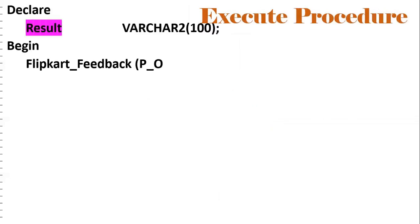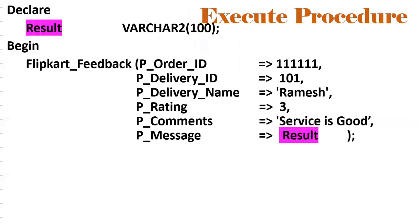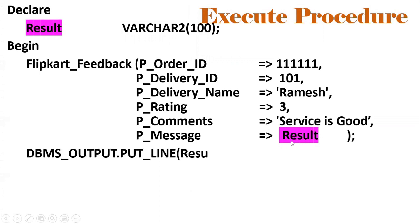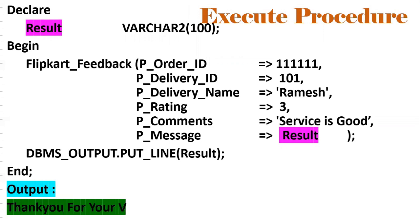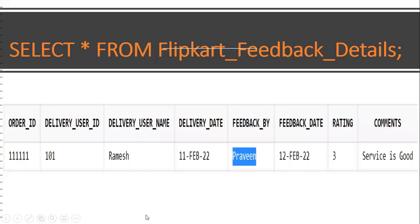Now I am executing the procedure using an anonymous block with DECLARE. The procedure name is 'flipkart_feedback'. The order ID is system-generated, followed by delivery ID, delivery name, and I am giving rating 3 — meaning good service — with the comment 'service is good', and the output variable. The output displayed is 'Thank you for your valuable feedback'. To verify in the database, we run SELECT * FROM flipkart_feedback_details. The record shows the order ID, feedback date of 11 February 2022, and the comment 'service is good'. These details are now captured in our database.